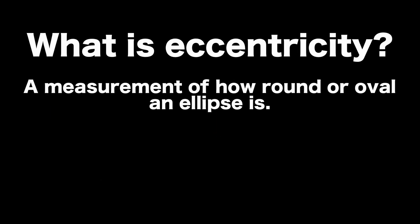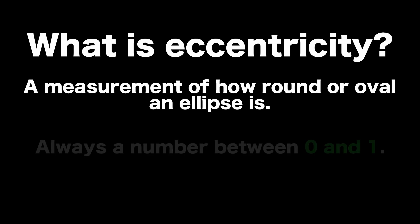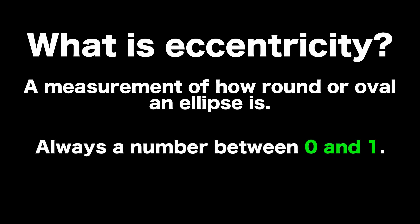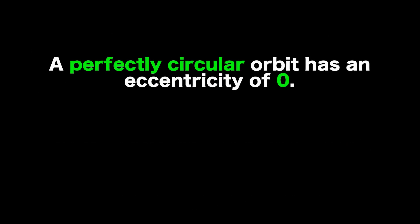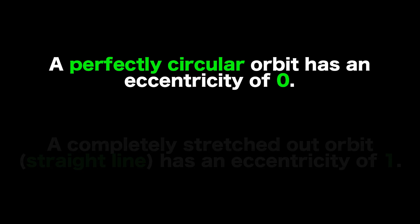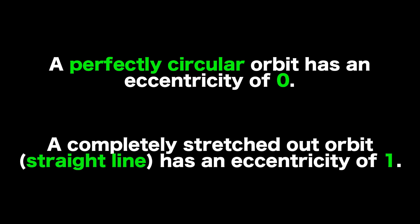So eccentricity is a measure of how round or oval an ellipse is going to be. Now your eccentricity is always going to fall in between 0 and 1. If you get an eccentricity greater than 1, you did something incorrect. And there's no units. Your numerator and denominator, the units cancel out. So a perfect circle is going to have an eccentricity of 0. A completely stretched out orbit, a perfect straight line, has an eccentricity of 1. So that's kind of your benchmark in terms of how to determine the shape of an orbit.